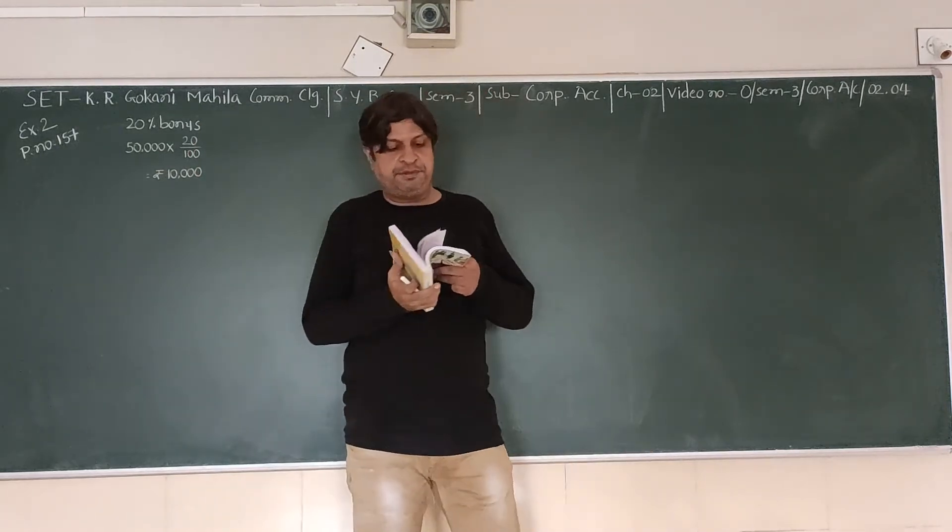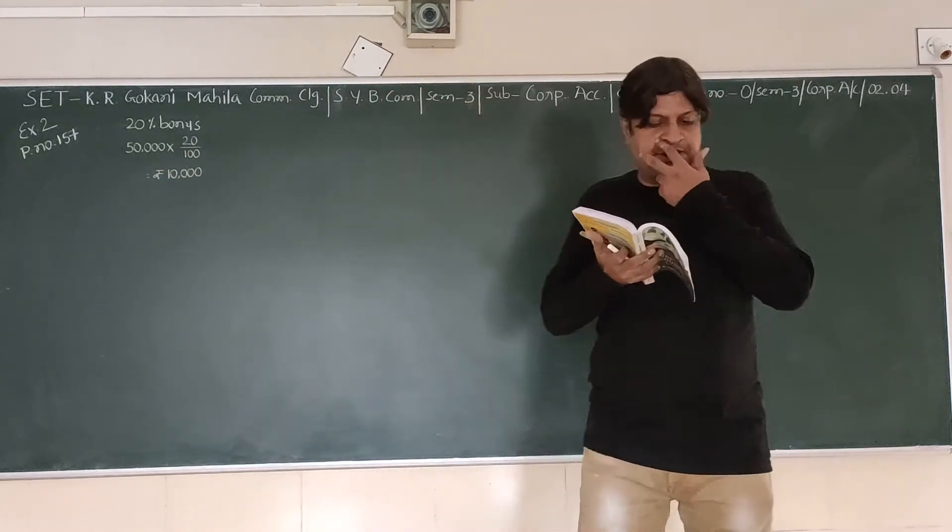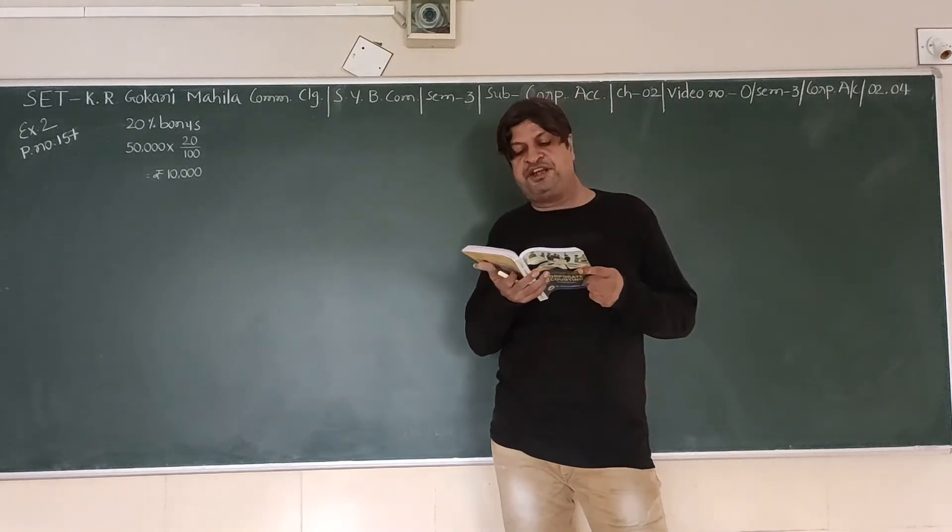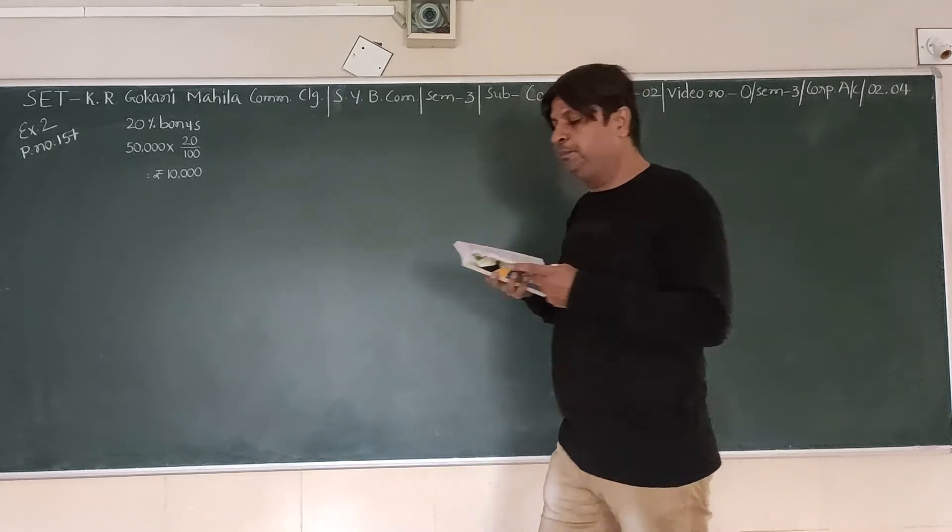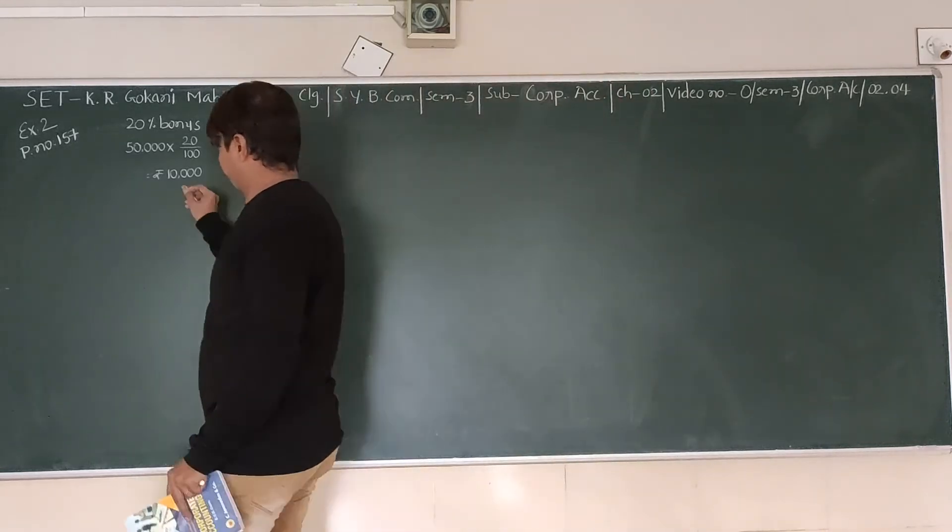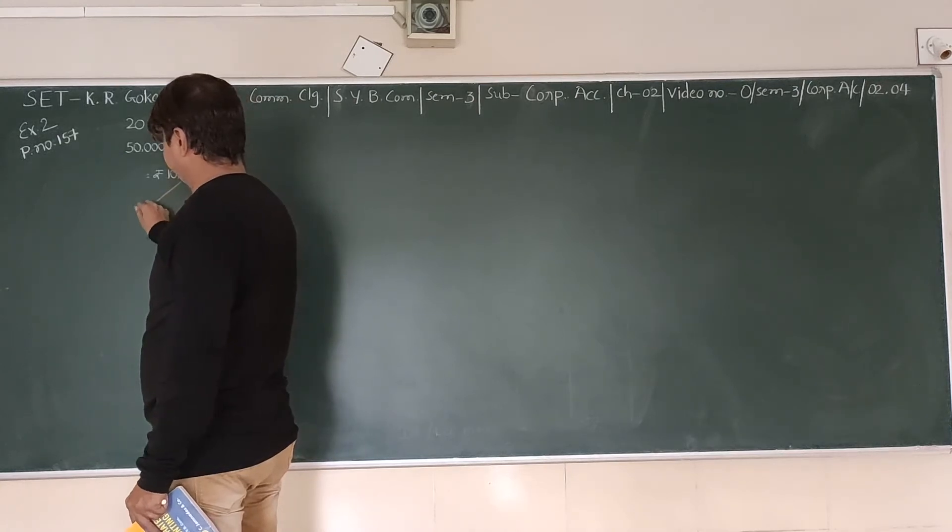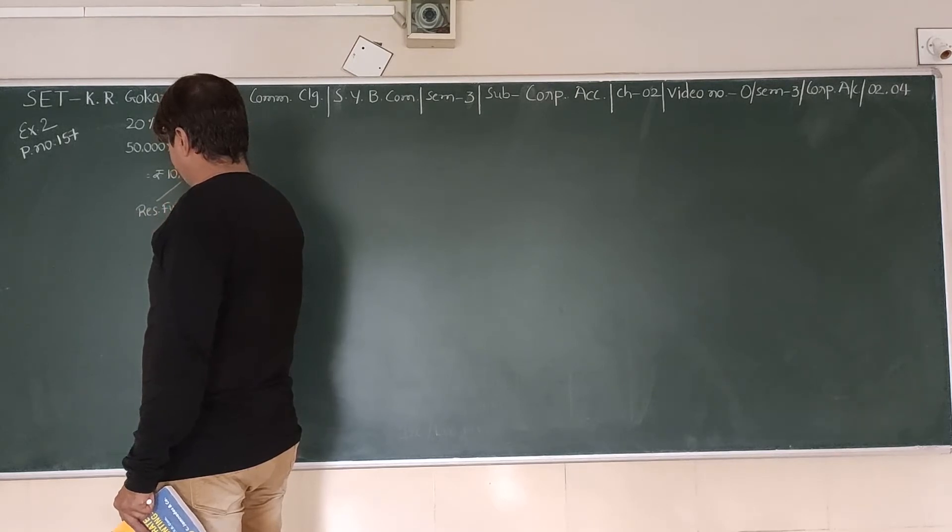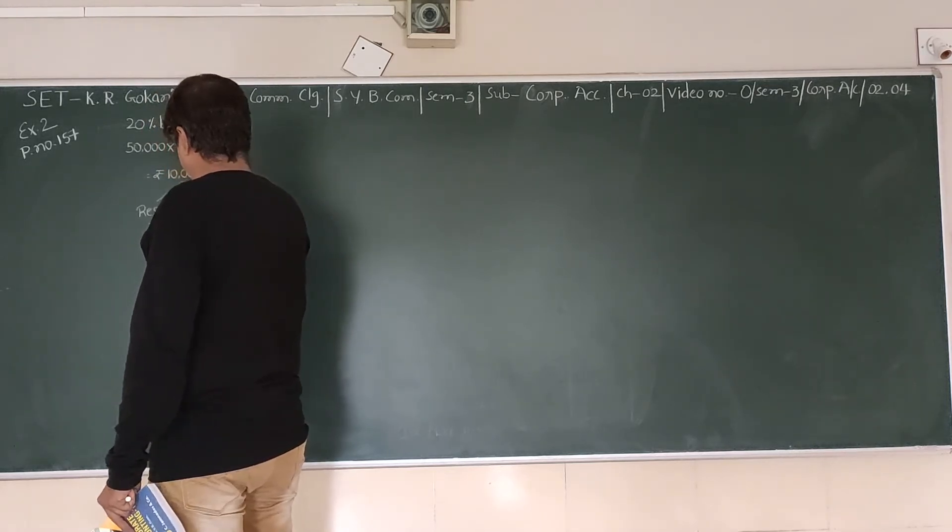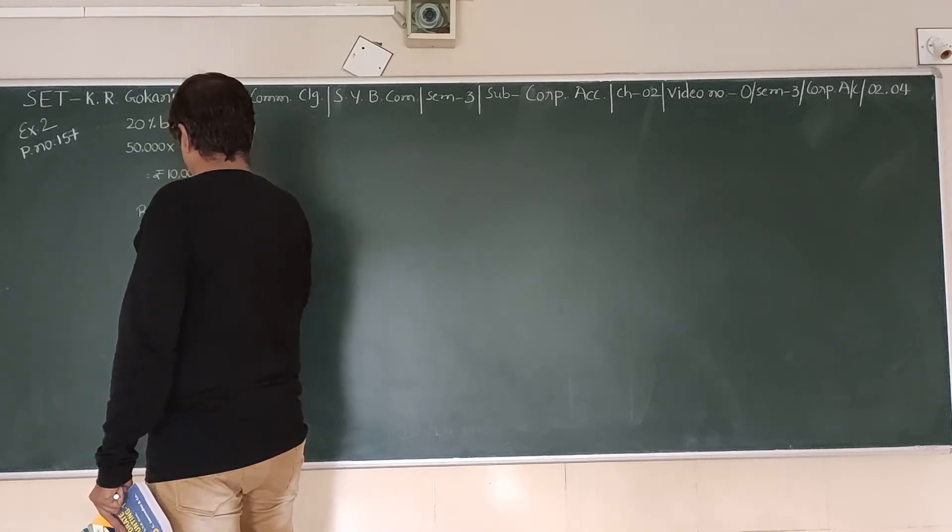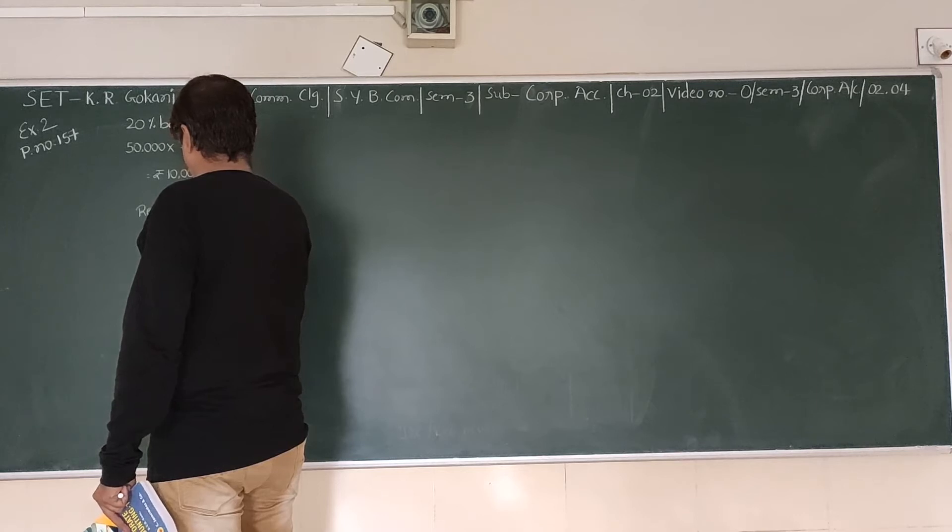Now read further. We are given that for this purpose 6,000 is obtained from Reserve Fund and remaining amount, that is 4,000 rupees, is to be taken from P&L account.